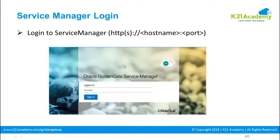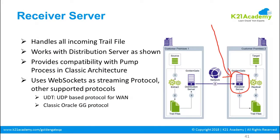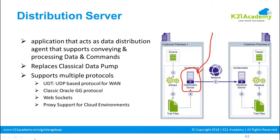The receiver server handles all incoming trail files and works with the distribution server, as shown in the diagram. It provides compatibility with the pump process and classic architecture. The distribution server distributes data over the network — it replaces the classical data pump. The work of the distribution server is almost the same as the data pump, but you have to configure it with some consideration.